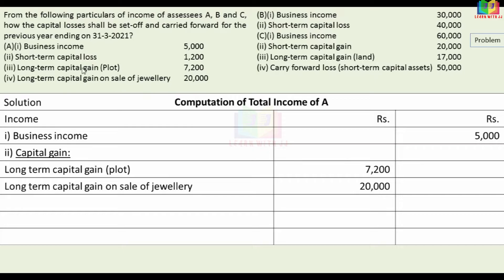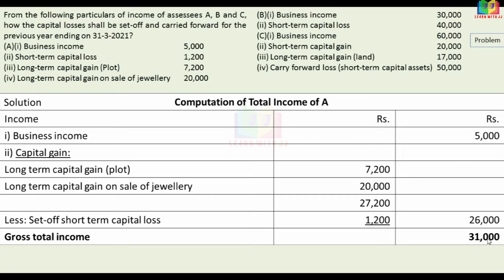In this gain of 27,200, we adjust the short-term capital loss against the long-term capital gain. After setting off the short-term capital loss, the balance capital gain is 26,000. So the total income for Assessee A is 5,000 (business income) plus 26,000 (capital gain), giving a gross total income of 31,000.